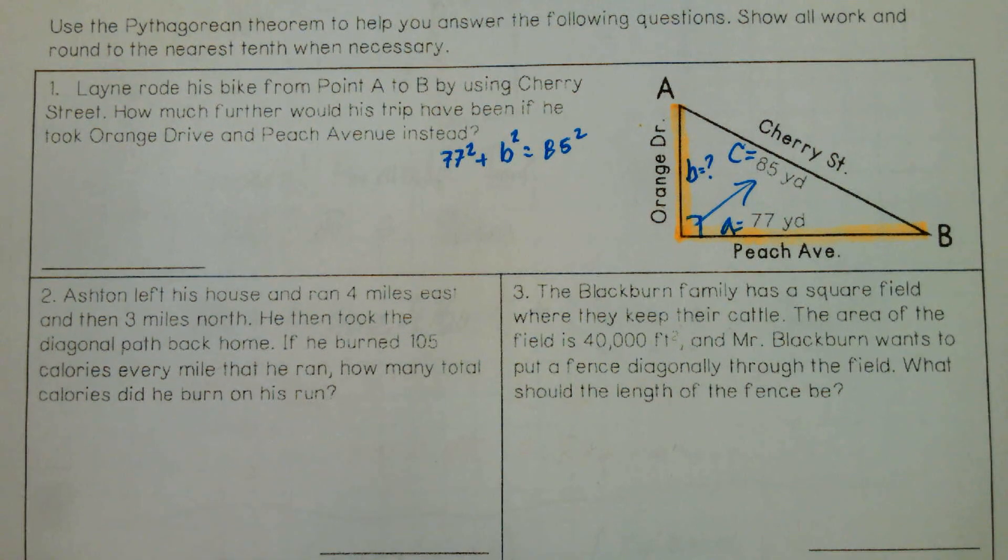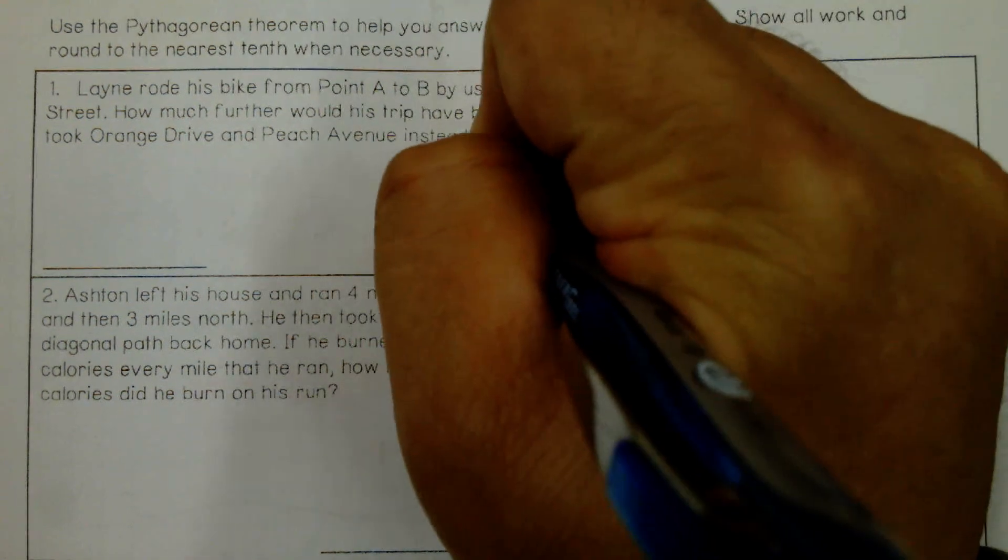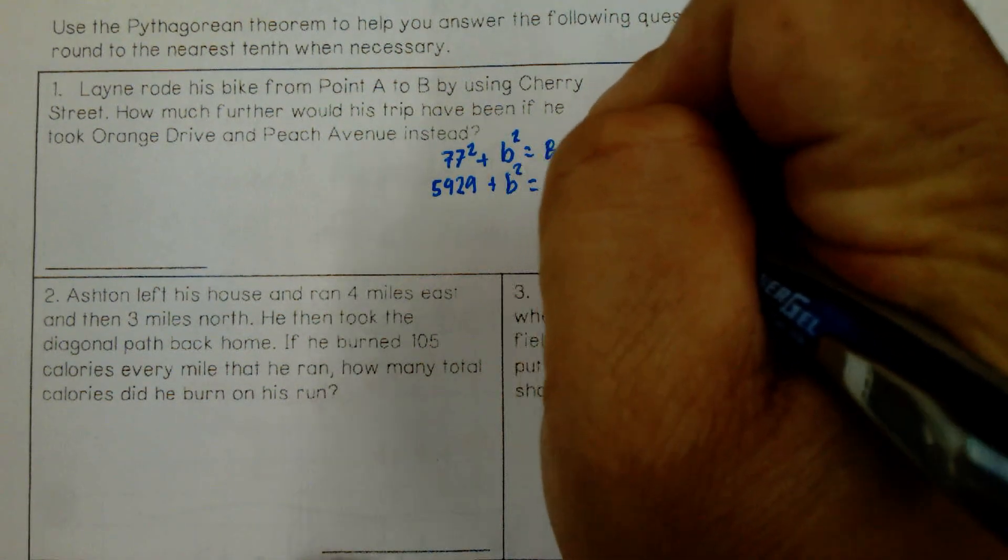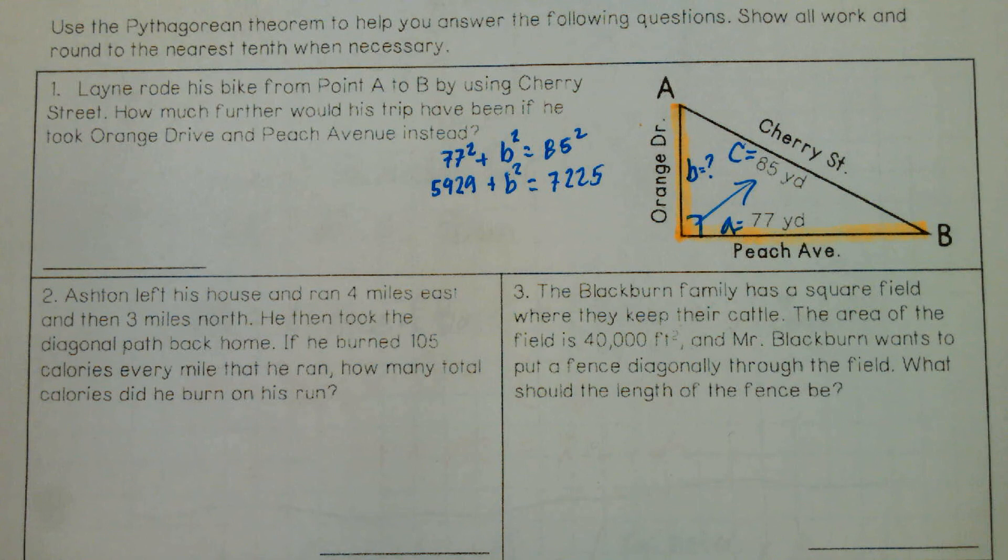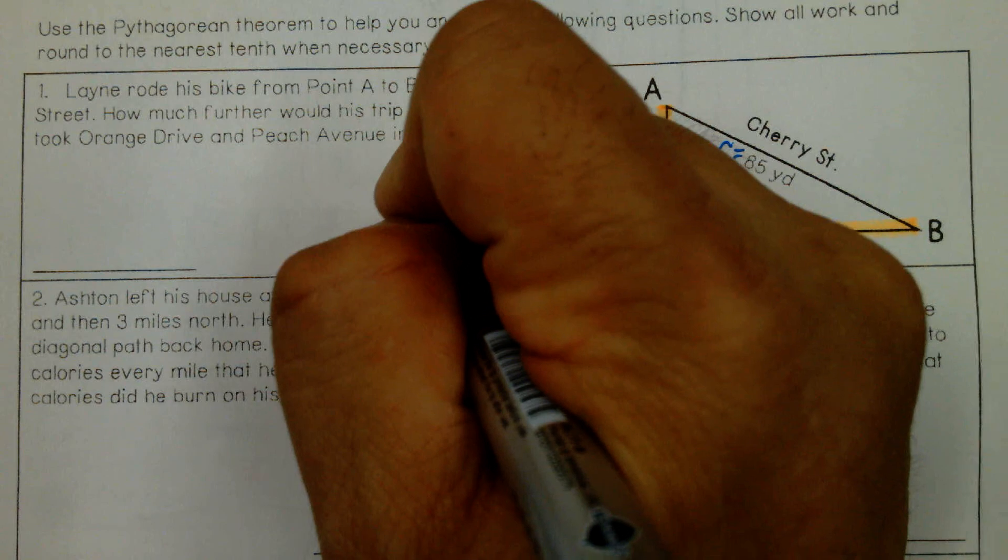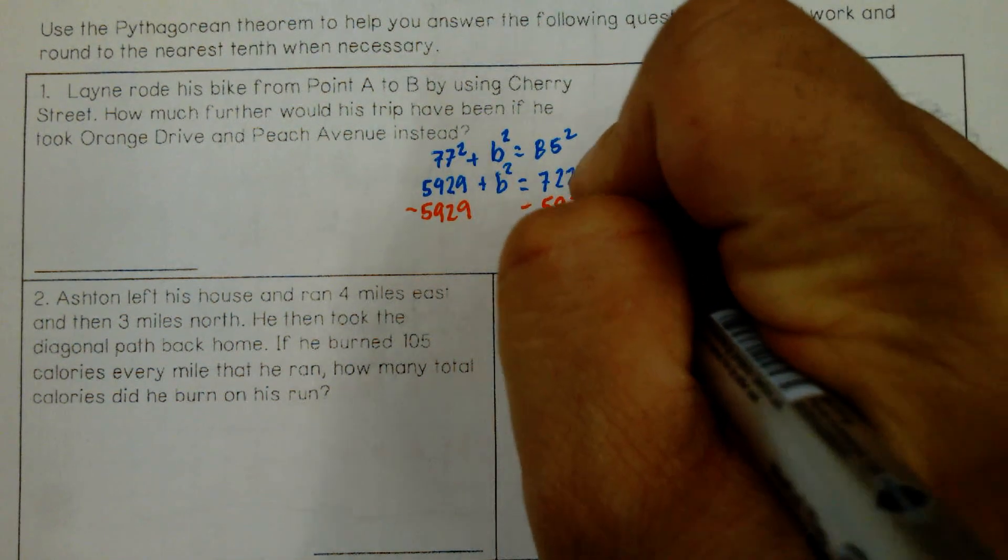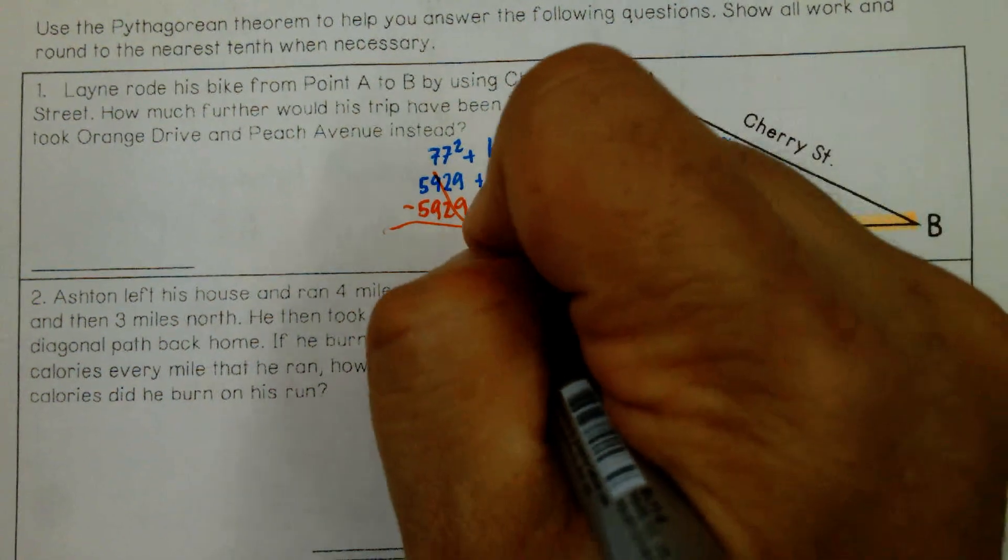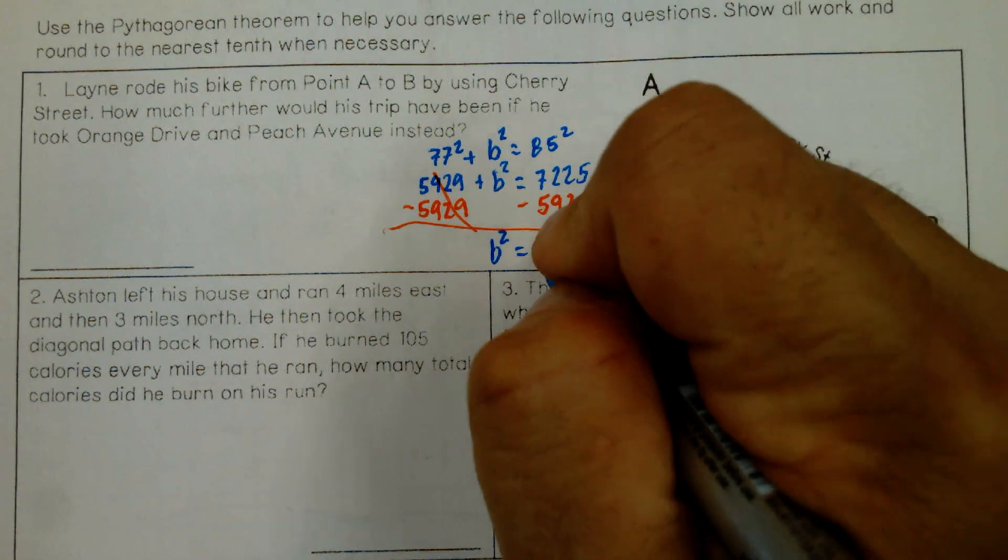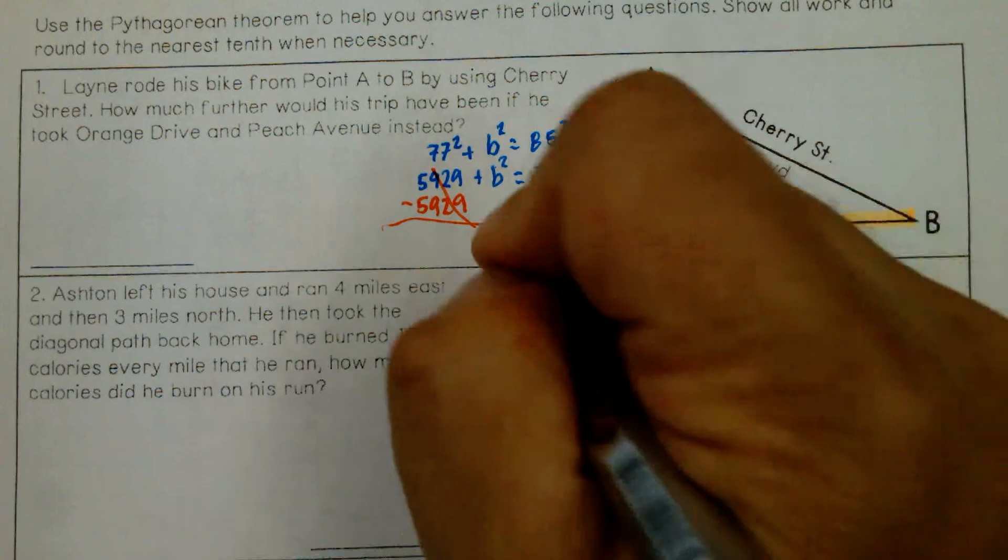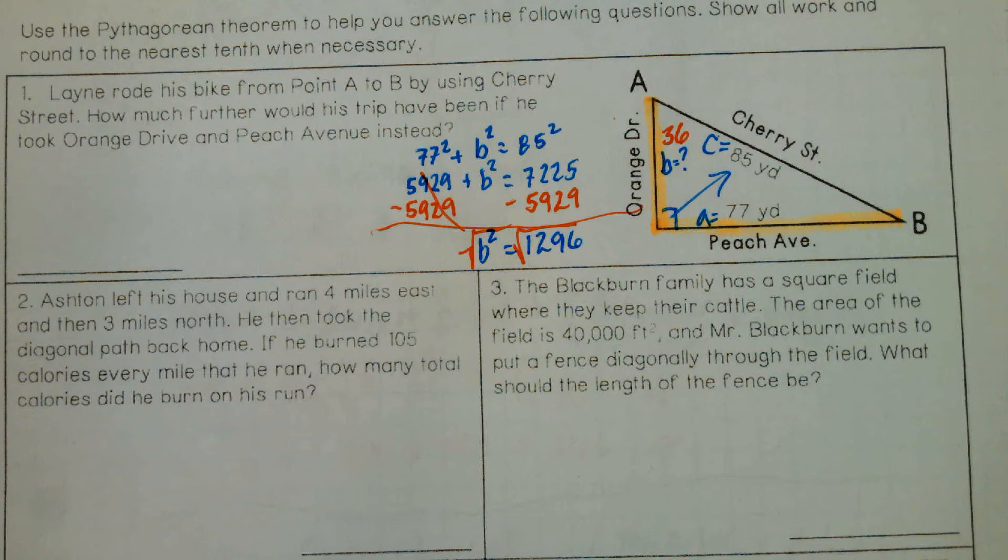So we're going to square 77, and we get 5,929 plus b squared equals 85 times 85 is 7,225. Let's go ahead and subtract 5,929. And that will give us b squared. And that's 1,296. And now we just square root that to get b. 36? So that's going to be 36 yards.